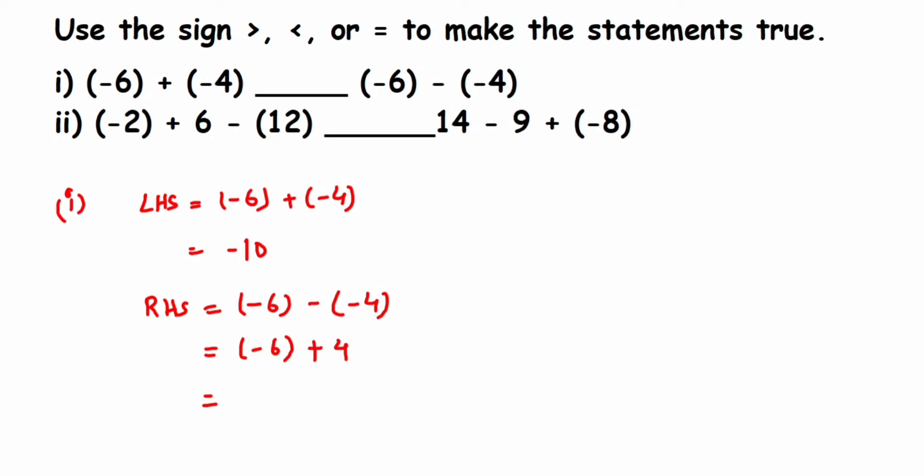Now you can see we have (-6) + 4. When you're adding a negative and positive, you have to subtract them. Minus plus is minus. Subtract the numbers: 6 minus 4 is 2, but the greater number is 6 and the sign is negative, so we'll put a minus sign here. You can see that (-2) is greater than (-10), so we can say that RHS is greater than LHS.